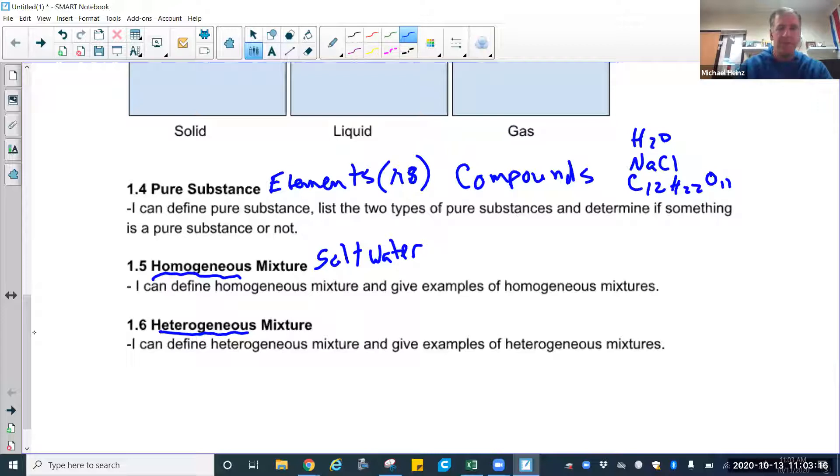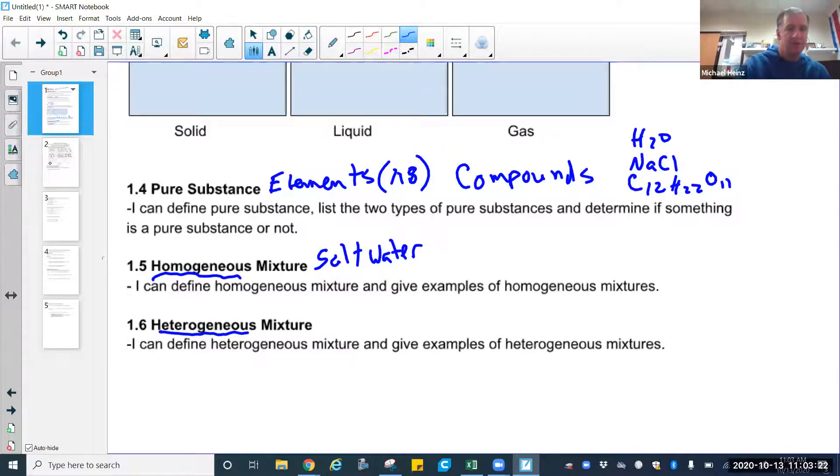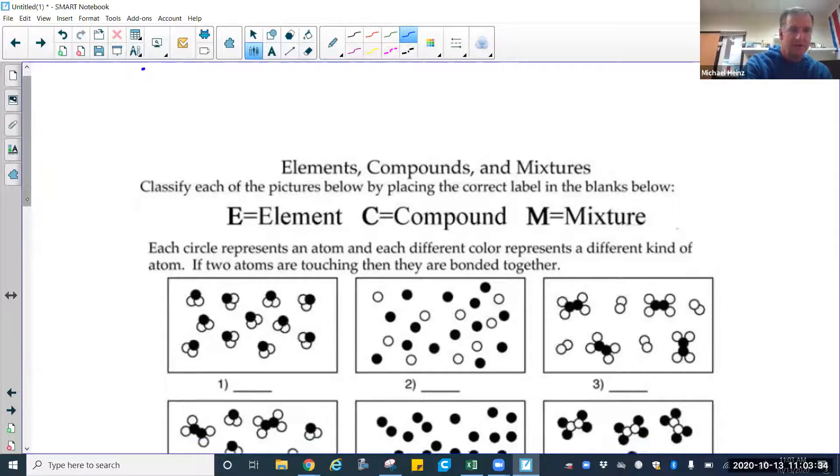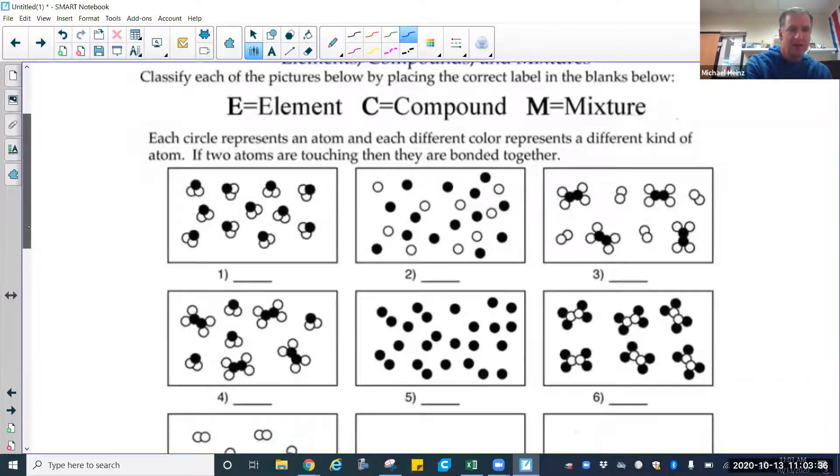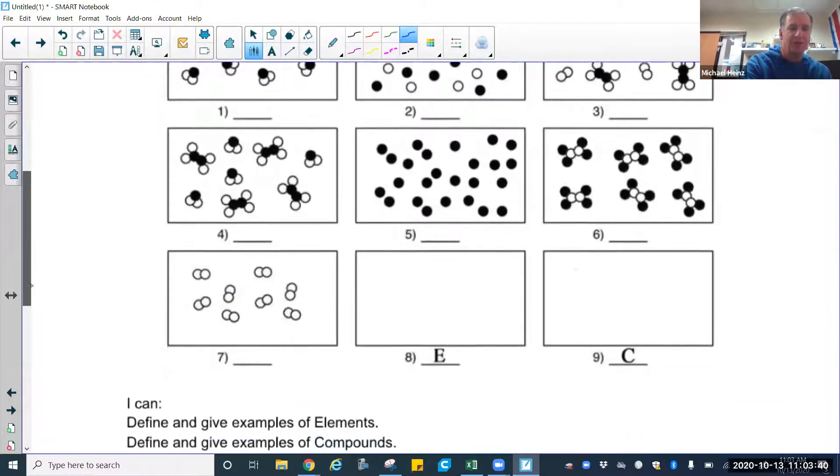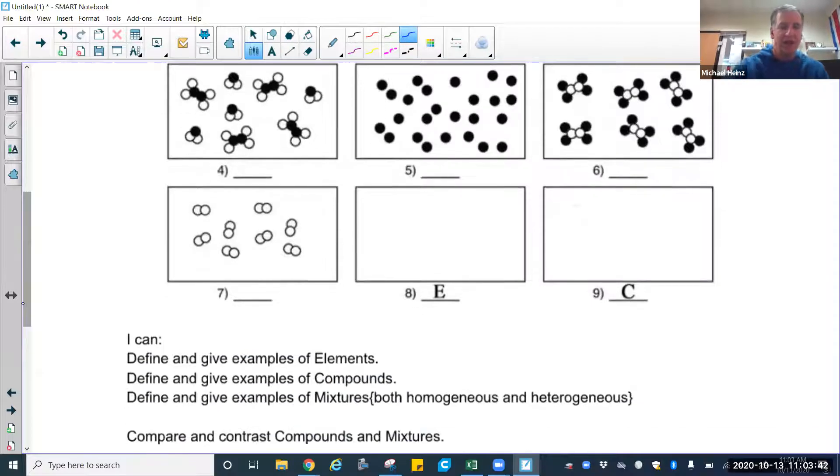So mixtures can't be pure substances. And you have either homogeneous versus heterogeneous. Look at the next page. Quick review. Again, this is a way for you to visualize elements, compounds, and mixtures in a visual format. So I'll let you decide. I'm not going to put an answer key up to this one. You're on your own for that. You should be able to decide what's there for eight and nine.